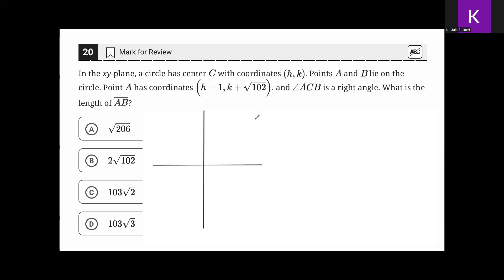This is question 20 from Module 2 Hard of Blue Book Practice Test number 5. In the xy-plane, a circle has center C with coordinates h, k. Points A and B lie on the circle. Point A has coordinates h plus 1 comma k plus the square root of 102, and angle ACB is a right angle. What is the length of AB?